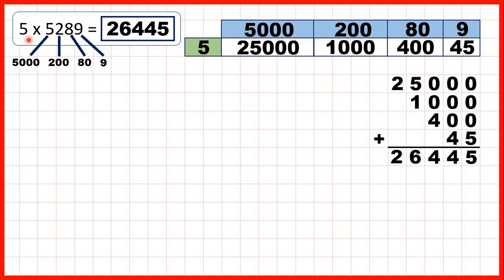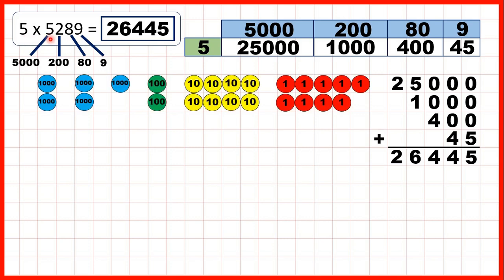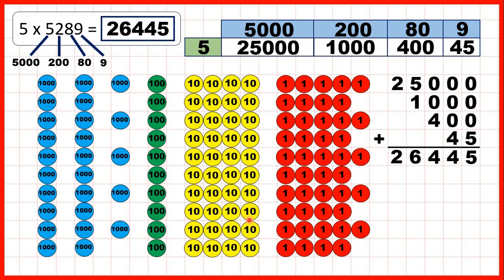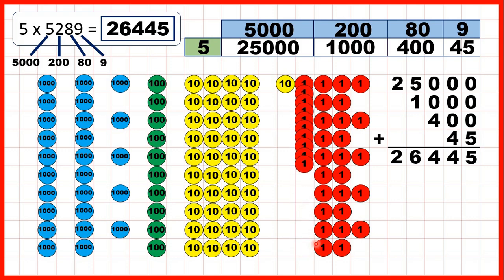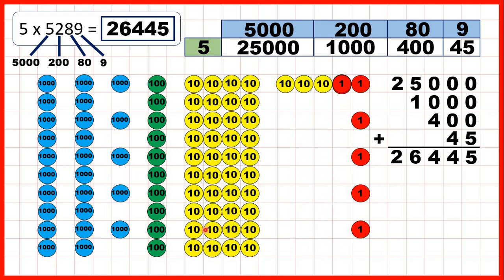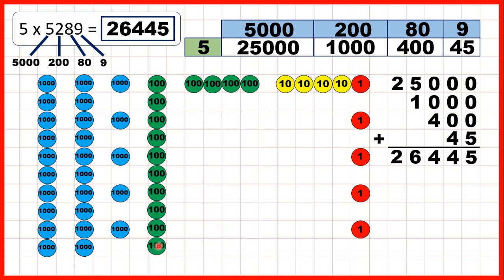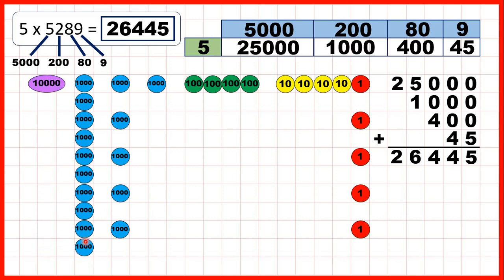If we go back to the first question we solved, we had 5,289 — so there's 5 thousands, 2 hundreds, 8 tens and 9 ones. We were multiplying by 5, so we can show this 2, 3, 4, 5 times. And then if we regroup 10 ones into 10, then 10 tens into 100, and 10 hundreds into 1,000, then 10 thousands into 10 thousand.